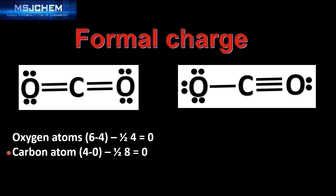Next we'll do the carbon atom. That's four — the number of valence electrons — minus zero, the number of non-bonding electrons around this carbon atom, minus half of eight, the number of bonding electrons from two double bonds. That gives us a formal charge on the carbon atom of zero. So in this Lewis structure each atom has a formal charge of zero.